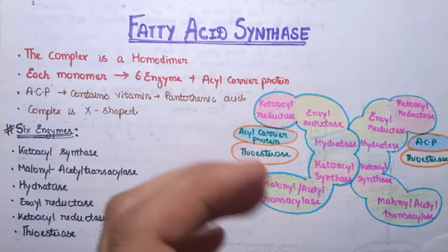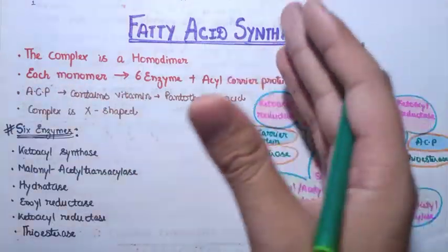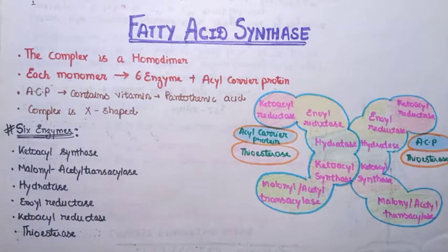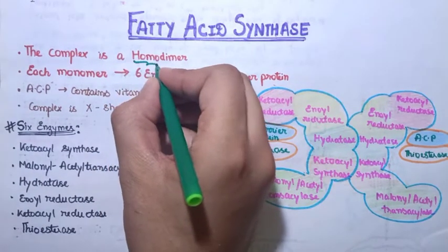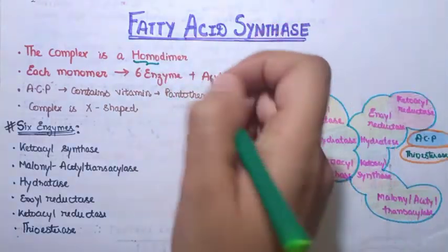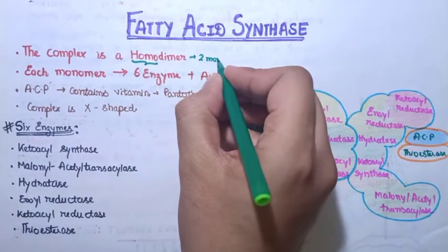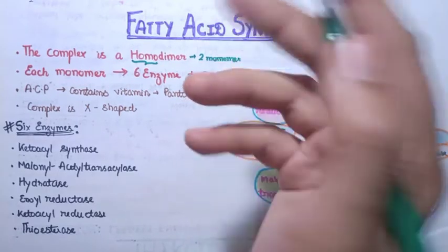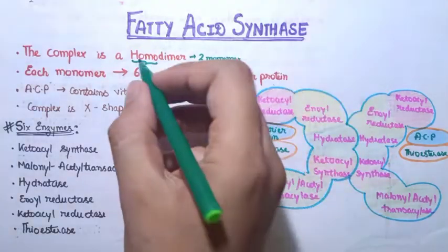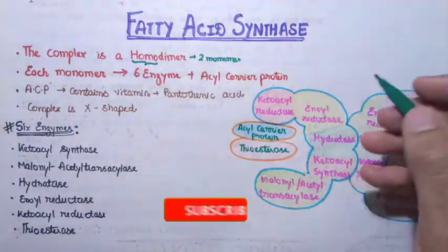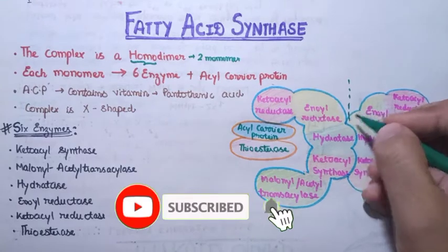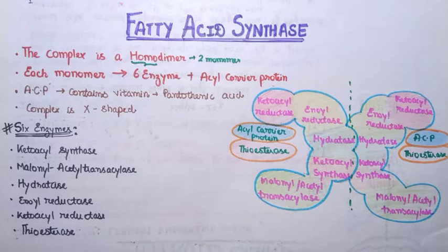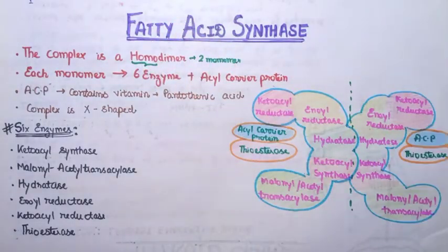The very first point you should know about this complex is that it is a homo dimer. Let's split this word: 'homo' means same, and 'dimer' means it consists of two monomers. So it is made up of two monomers that are exactly similar — that's why we refer to it as a homo dimer. If you draw a line passing through the center, you can divide the whole complex into two equal monomers.